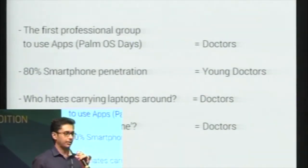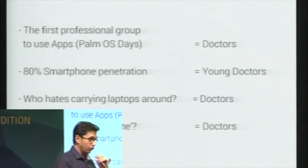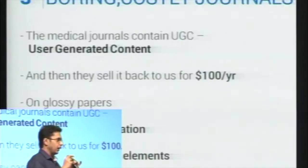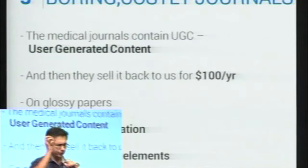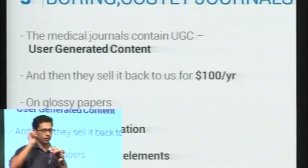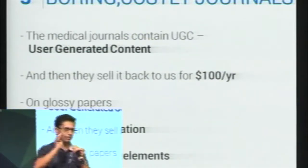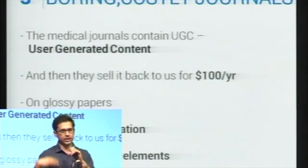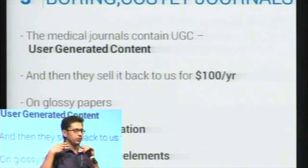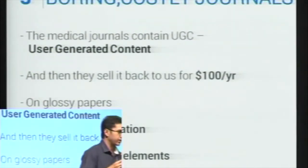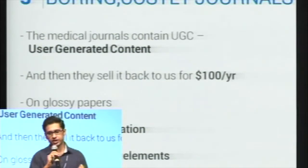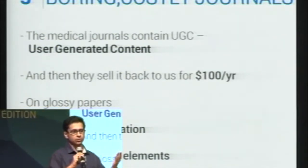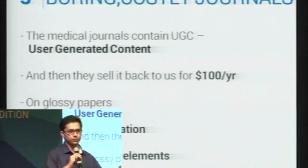The third thing is disrupting journals. In the world of Wikipedia, Quora, and Stack Overflow — if you think about journals, they are in a sense user-generated content. You send something to the journal, they accept it, they publish it, and then they sell it back to us for $100. So something is broken here. There is no personalization, no social element, no significant interaction happening.